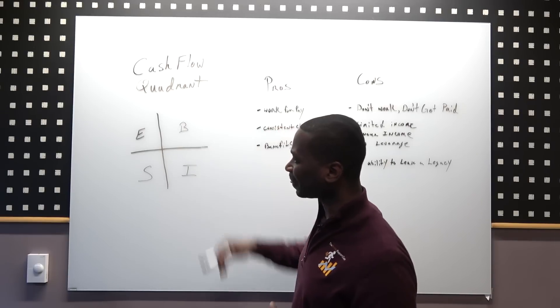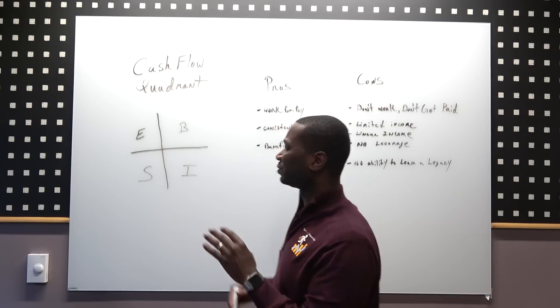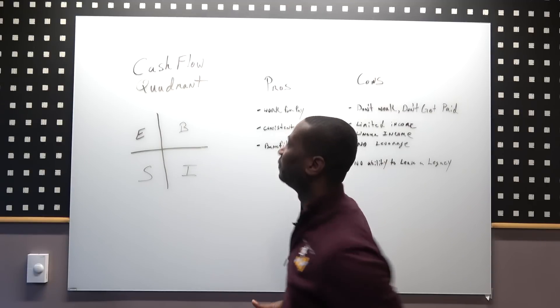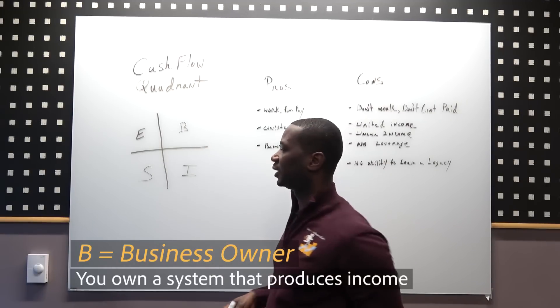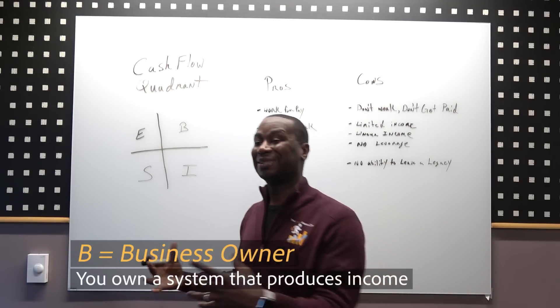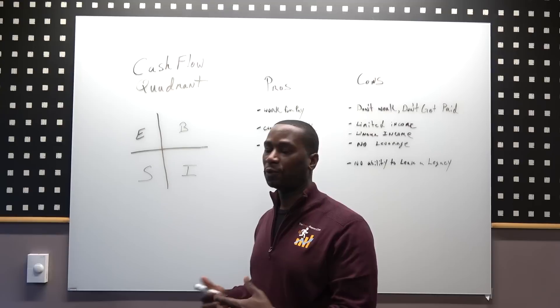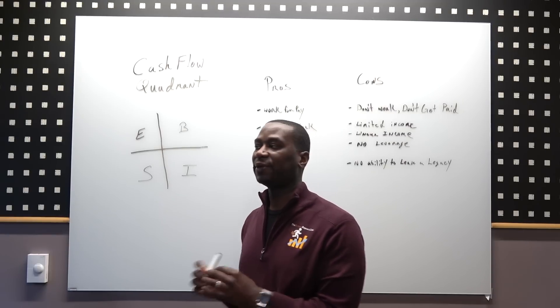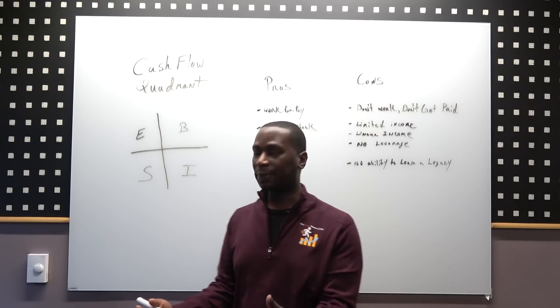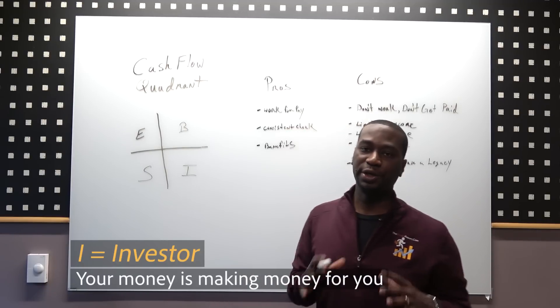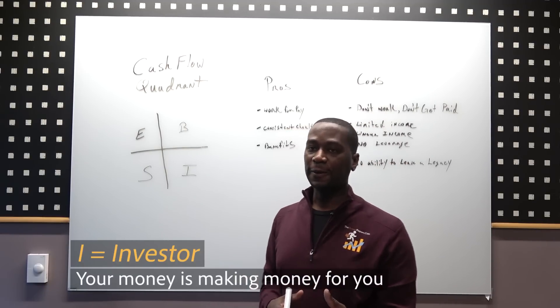That leads me to this side of the quadrant. This is the side where wealth is created - on the business and the investor side. The business owner owns a business or system that produces income with or without you, or with very little of your input. Then you got the I quadrant, which is the investor quadrant, where your money is making money for you.